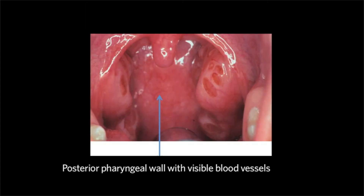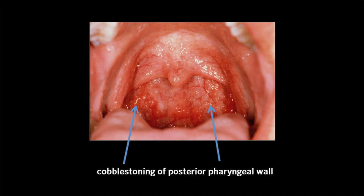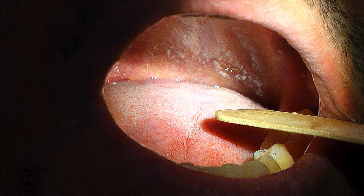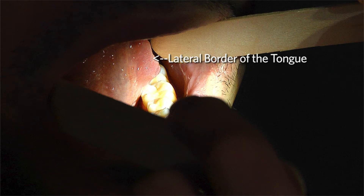The posterior pharyngeal wall is smooth but may contain some visible blood vessels or small islands of lymphoid tissue. This is called cobblestoning, a normal variant. The tongue is pink but has many papillae on its dorsal surface, which may become stained from foods or nicotine. The lateral border of the tongue is smooth and pink.